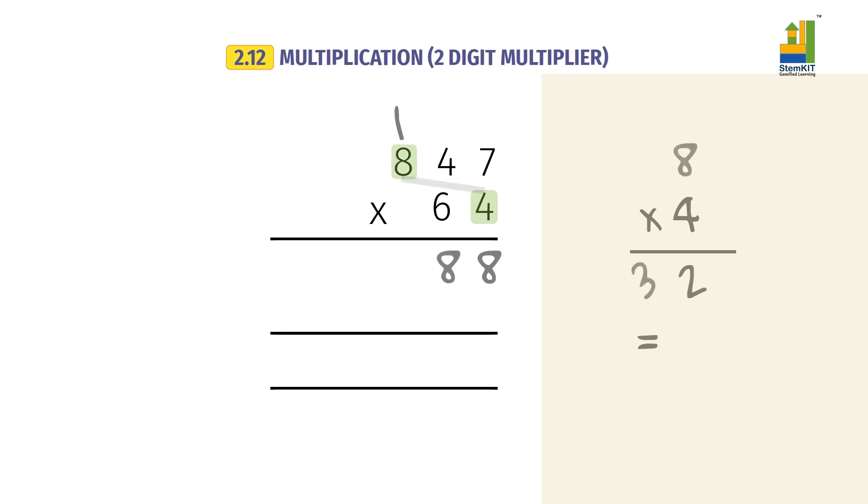8 into 4 equals 32. Add 1 carry over. We get 33. Write 33.